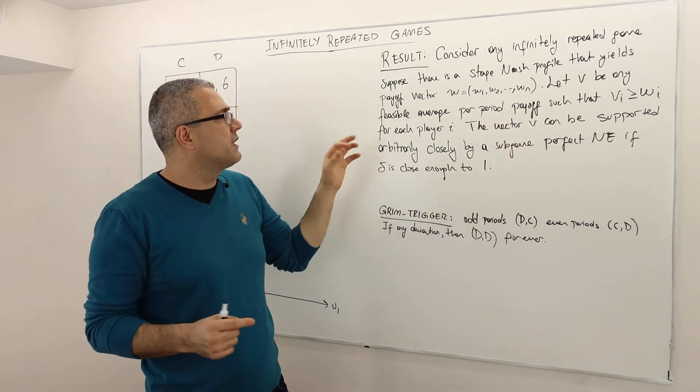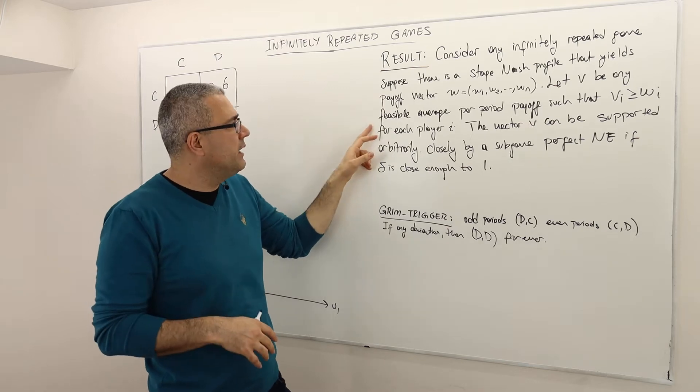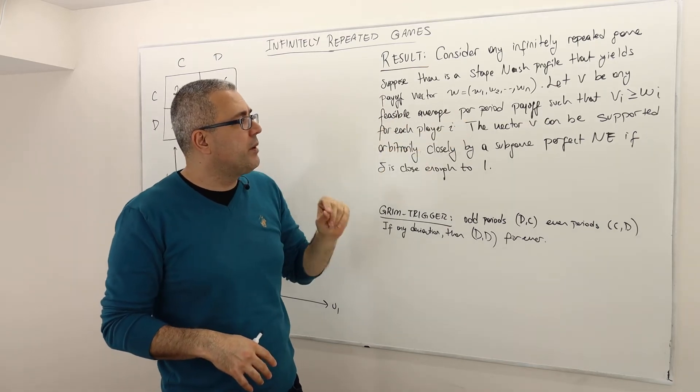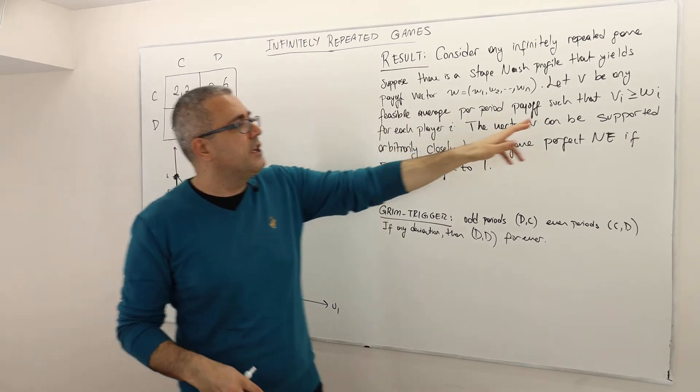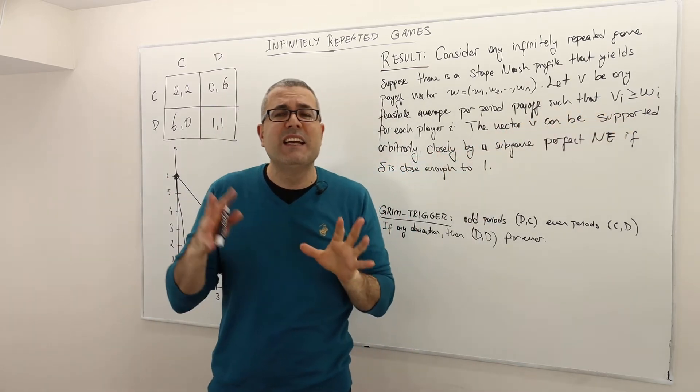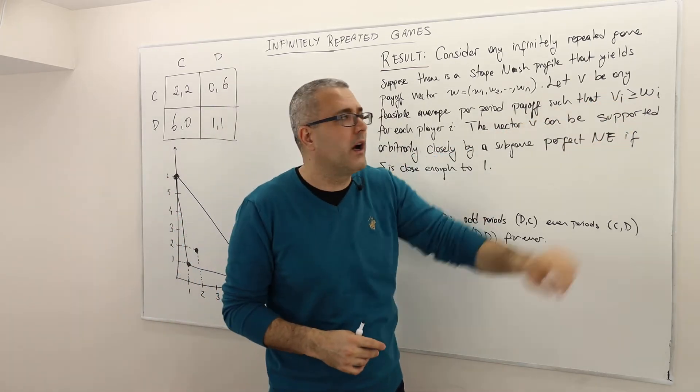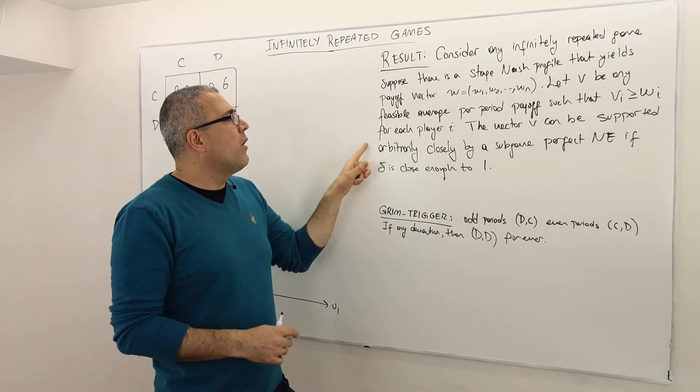I'll talk about what feasible means. Feasible average per period payoff, such that each player receives at least the Nash equilibrium payoff WI in this V.